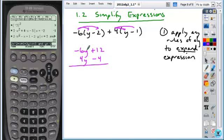You get negative 6y plus 4y nets you negative 2y. And then the 12 minus 4 nets you a plus 8. So you get your expression negative 2y plus 8.